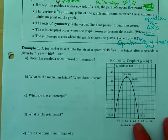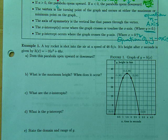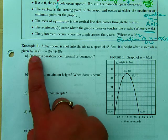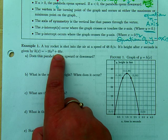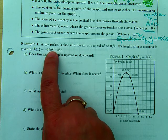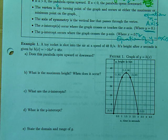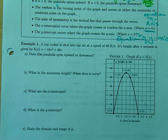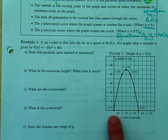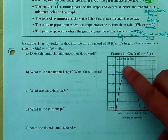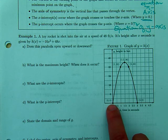We get into a few story problems here. A toy rocket is shot into the air at a speed of 48 feet per second. Its height after x seconds is given by h of x, which is equal to negative 16x squared plus 48x. The fact that there is the exponent of two makes it a quadratic, and that's why you're going to have this pattern.